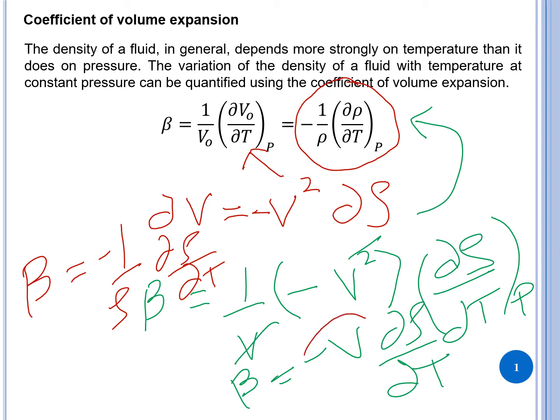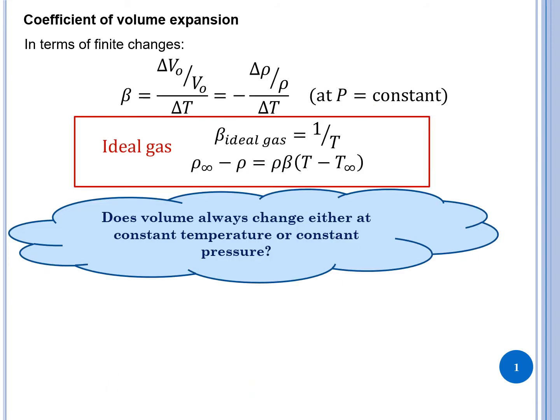For a unit mass, v equals 1 over rho, which accounts for the negative sign — that's how we obtain the coefficient of volume expansion in terms of density. For finite changes, beta becomes delta-v-naught over v-naught divided by delta-T, or in terms of density it is negative delta-rho over rho divided by delta-T, at constant pressure.